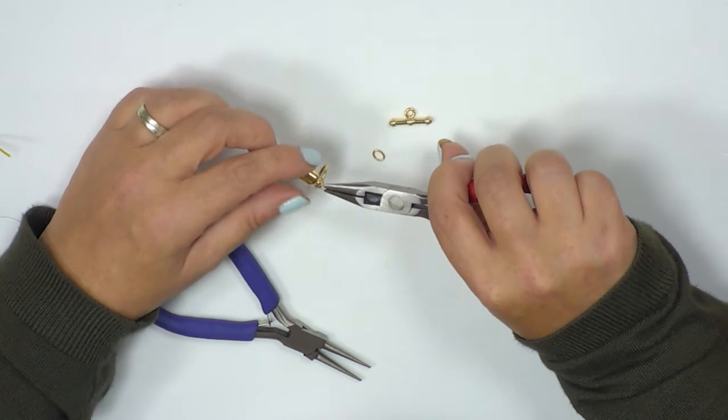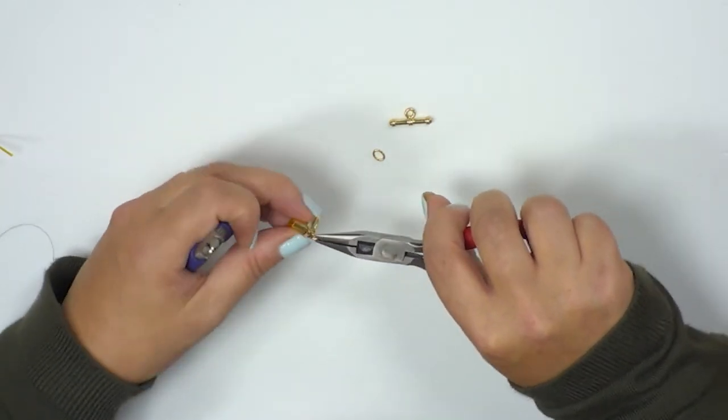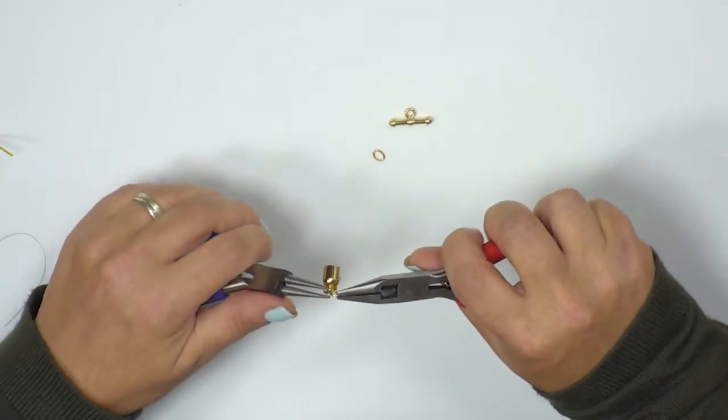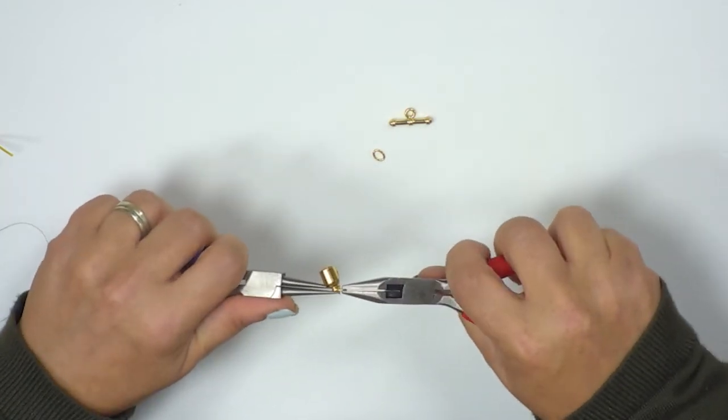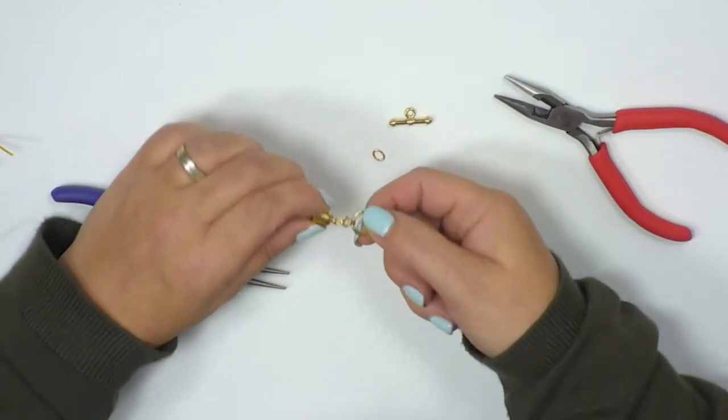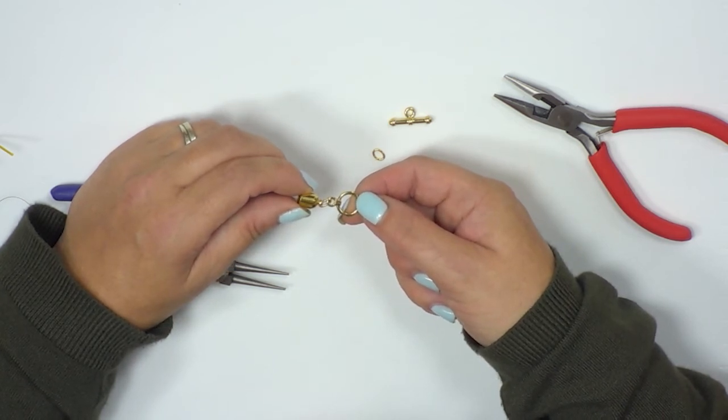So you can see now how that's all in place. Using my pliers I'm just going to close up this jump ring so holding the jump ring still and twisting the jump ring backwards from south to north until the jump ring is attached then to the toggle clasp and to the end cap.